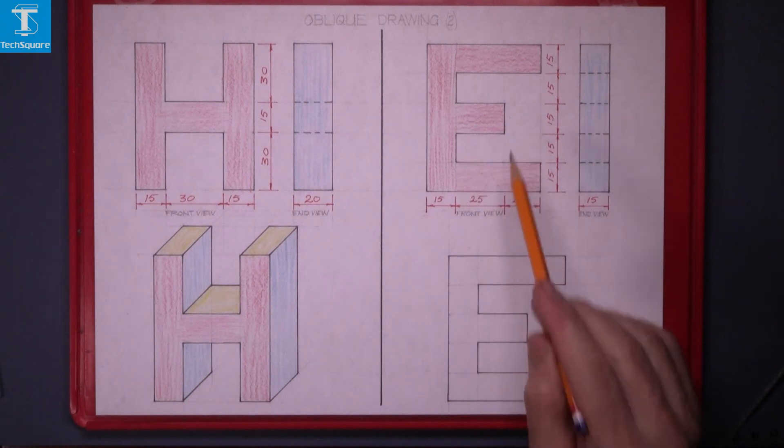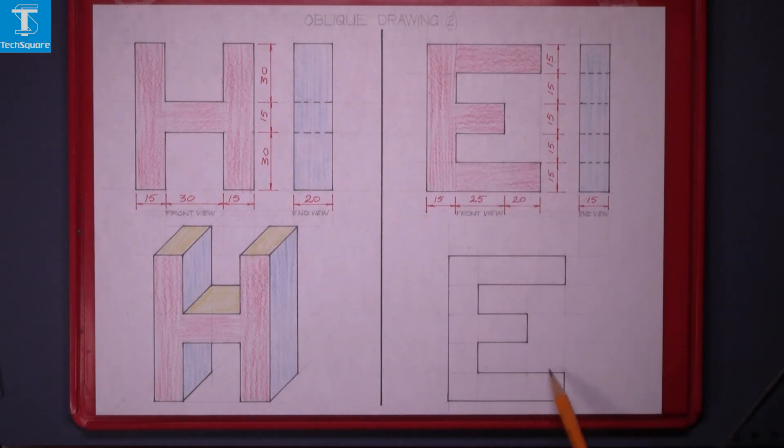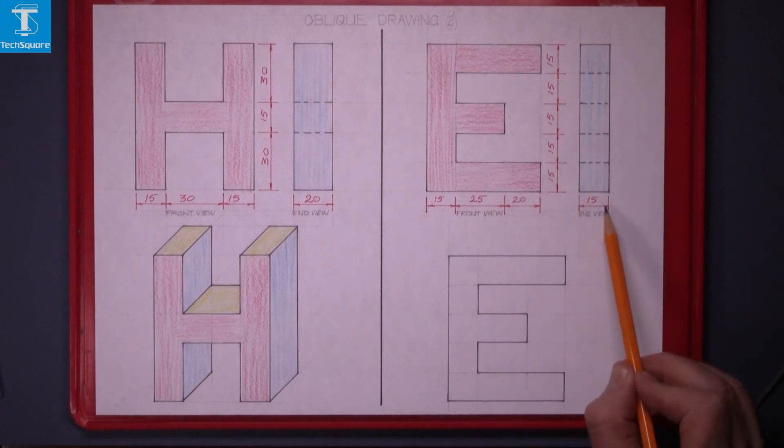Now we're looking at the letter E here. Again I've drawn the front of it with the measurements. The thickness of this letter is 15.